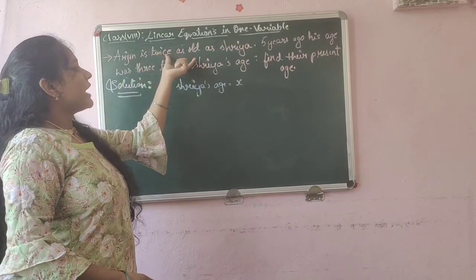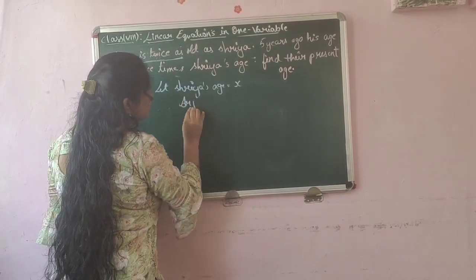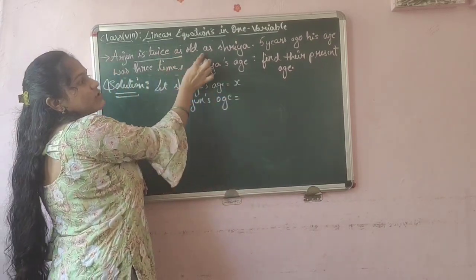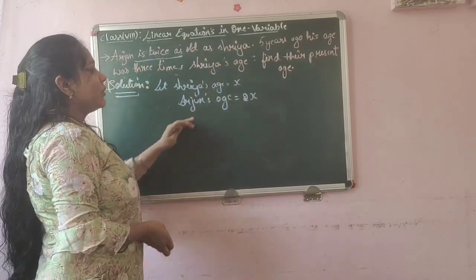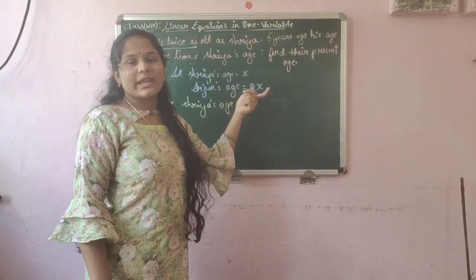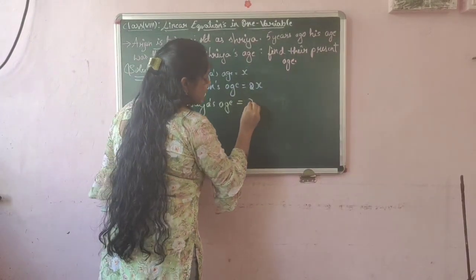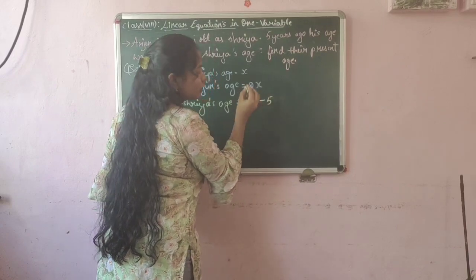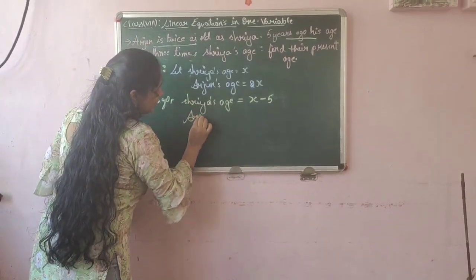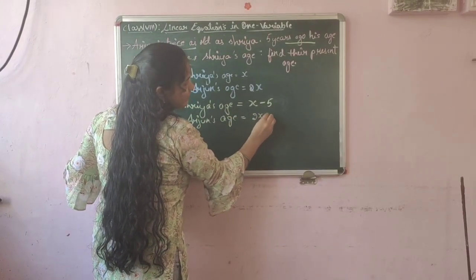Arjun's age is twice as old as Shriya, which means we multiply by 2, so Arjun's age is 2x. Now, 5 years ago, his age was 3 times Shriya's age. Five years ago, Shriya's age would be x minus 5, and Arjun's age would be 2x minus 5.